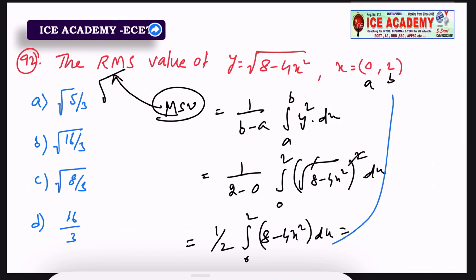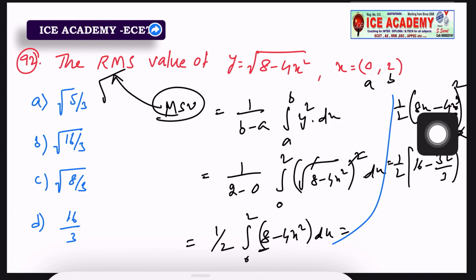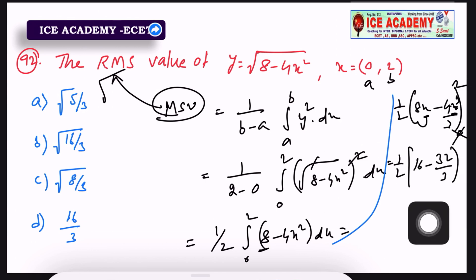Simplifying: (1/2) · [8x − (4x³/3)] evaluated from 0 to 2. Applying the upper limit x = 2: 8(2) = 16, and 4(8)/3 = 32/3. Applying the lower limit x = 0 gives 0. So the bracket gives 16 − 32/3, which simplifies to 48/3 − 32/3 = 16/3. Multiplying by 1/2 gives 8/3.